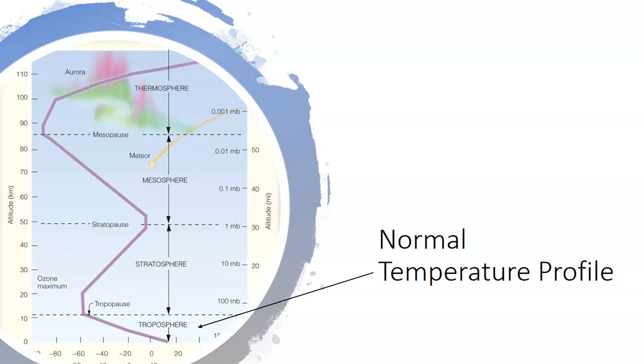So we've looked at this before, back in previous units, the normal temperature profile of the atmosphere. We all know that down here in the troposphere where we live, we see a nice temperature decrease with altitude. And then in the stratosphere we see an increase, mesosphere decrease in temperature with altitude, etc.